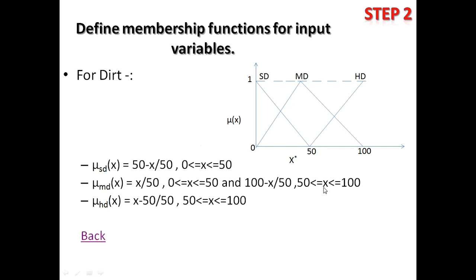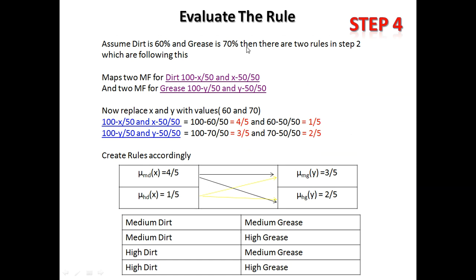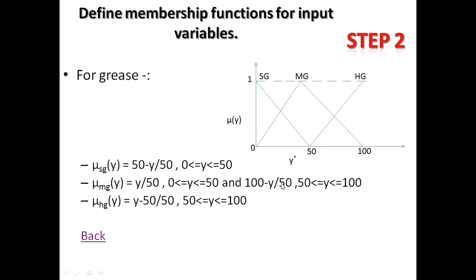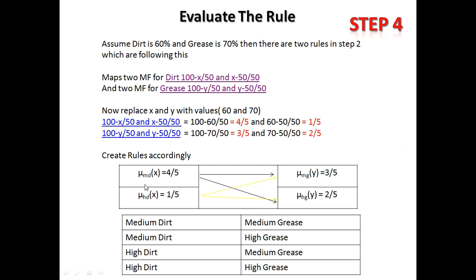For dirt, x is between 50 and 100, so both membership functions apply: (x − 50)/50 and (100 − x)/50. Similarly for grease, y between 50 and 100 gives two active functions: (100 − y)/50 and (y − 50)/50. We take the formulas for both dirt and grease and substitute x = 60 and y = 70.